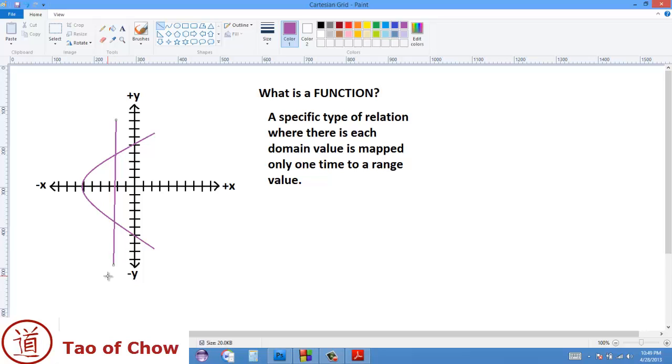So that's basically what it means, is that anywhere along the x-axis, those are all the domain values, there's only one, it only gets mapped one time to a range value.